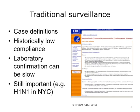Manual disease reporting historically has low compliance. Manual reporting is typically a slow process, as it often relies on laboratory confirmation. However, this does not mean that traditional surveillance is not important or should eventually be replaced with technological improvements.